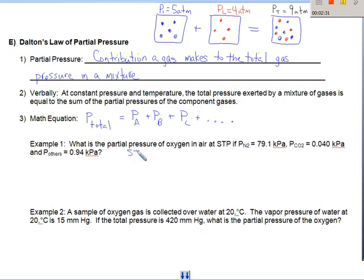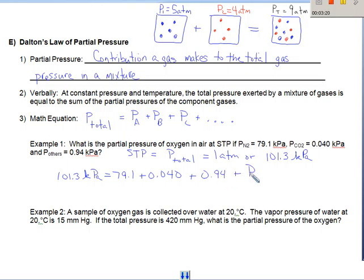Remember at STP, our total pressure equals 1 atmosphere, or 101.3 kPa. So let's use the 101.3 kPa so all of our units are consistent. So we're going to have 101.3 kPa, that's our total pressure, equals 79.1 plus 0.040, plus 0.94, and then the last thing that we have left is the partial pressure of our oxygen.